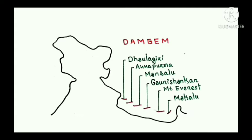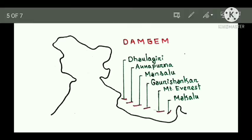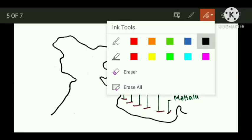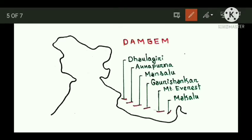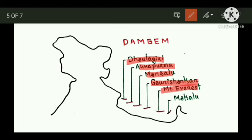Next is Nepal. Here is your second mnemonic: DAM ZEM. D for Dhaulagiri, A for Annapurna, M for Manaslu, G for Gauri Shankar, E for Everest, M for Makalu. Pause the video and repeat this three to four times.